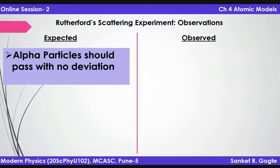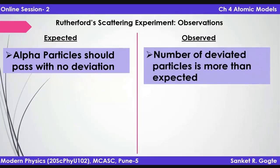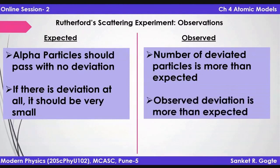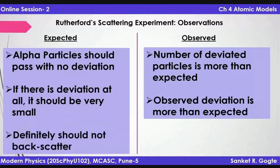So there was no reason for alpha particles to deflect at all when passing through Thomson's atoms. It was expected that almost all alpha particles should pass without any deviation. And it was true — most of the alpha particles did pass through the gold foil without deviation. But the number of deviated particles was more than what was expected, which was one hint that atoms could not be the way as proposed by Thomson. Furthermore, even in the small number of deviating particles, the deviation was more than expected.